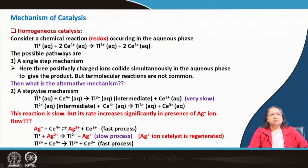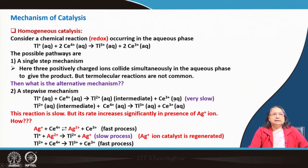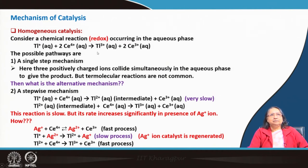Instead of a single-step mechanism, we can think about a stepwise mechanism. In the first step, thallium⁺ plus cerium⁴⁺ gives thallium²⁺ — this is an intermediate, because thallium²⁺ does not appear in the final reaction. We produce it in one step, so we need another step where it is consumed. Then cerium⁴⁺ goes to cerium³⁺, but this reaction is very, very slow.